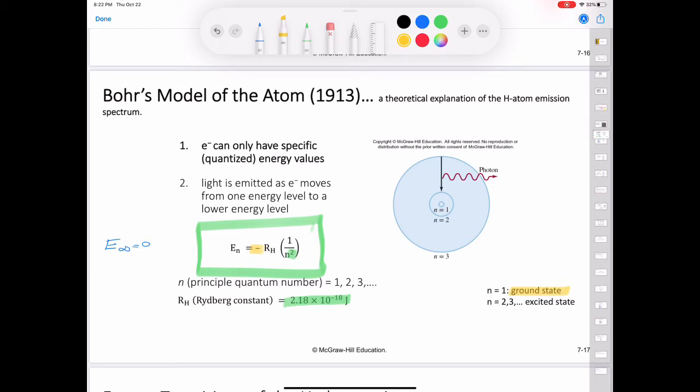We call this the ground state, or the ground level, which refers to the lowest energy state of a system. The stability of the electron diminishes as n increases to 2, 3, and so on. Each of these levels is called an excited state or an excited level, which is higher in energy than the ground state. A hydrogen atom, for which n is greater than 1, is said to be in an excited state.